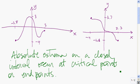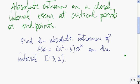Let's start with an example. This function here, x squared minus 3 times e to the x — we want to restrict that function to the interval from negative 3 to 2 and find the absolute extrema of the function on that interval. So we start by finding the critical points.